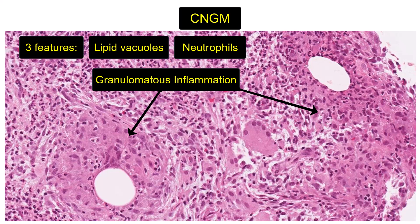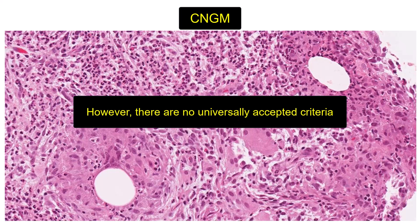You may also see other signs of granulomatous inflammation, such as multinucleated Langhans-type giant cells. However, there are no universally accepted diagnostic criteria for CNGM, and its features can overlap with other types of granulomatous mastitis.